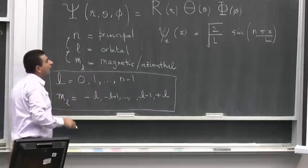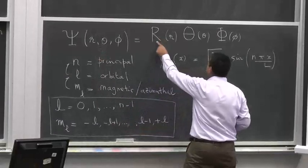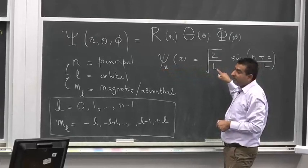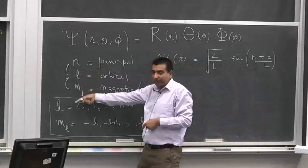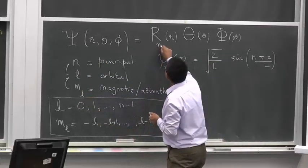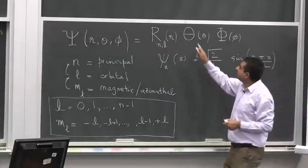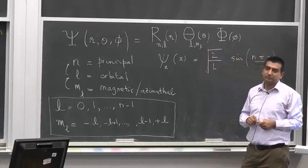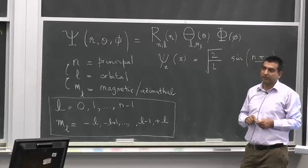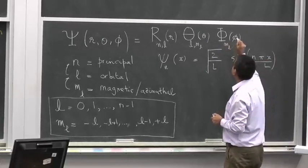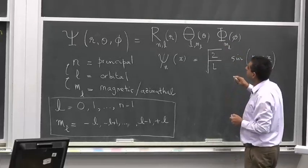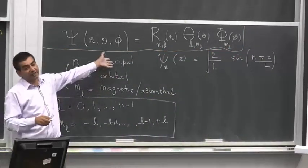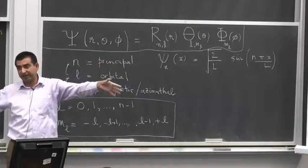Dependent on these quantum numbers, the wave functions are going to change — just as, depending upon n, the wave function changes in the 1D well. It turns out that R depends only on n and l; Theta depends upon l and ml; and Phi depends upon ml. These wave functions are actually nothing but the orbitals, as we'll explore in a minute — we're going to draw them from first principles.